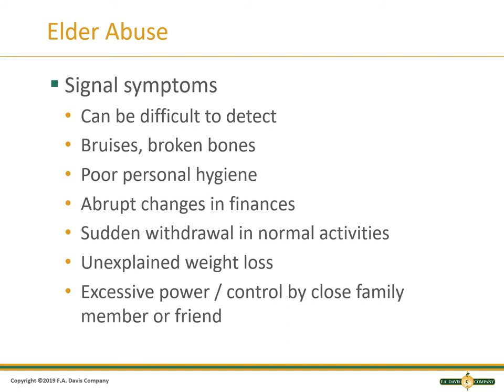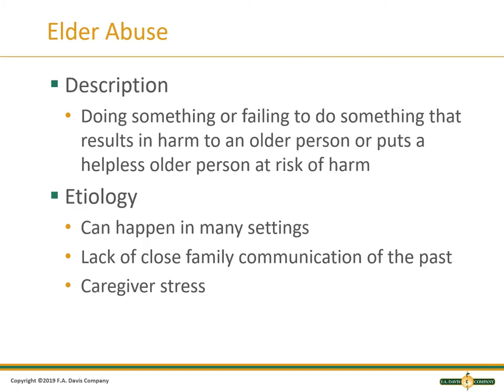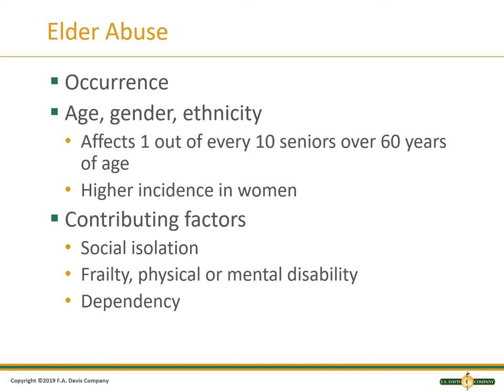When looking at physical symptoms like withdrawal and weight loss, make sure there is not a metabolic cause. Elder abuse is something that results in harm to an older person through neglect or failing to do something that could result in harm, putting a helpless older person at risk. It can happen in many settings — a facility, the hospital, at home, or a respite facility. Normally there is a lack of close family communication, caregiver stress, and a high patient load. It affects one out of every 10 seniors over age 60, with a higher incidence in women. Contributing factors include social isolation, dependency, frailty, and physical or mental disability.